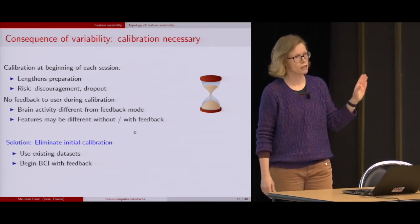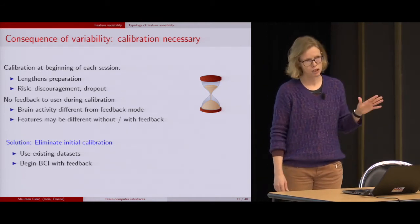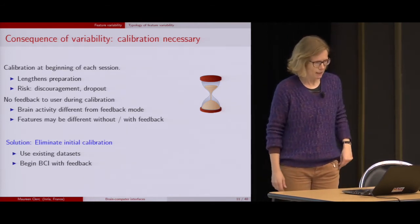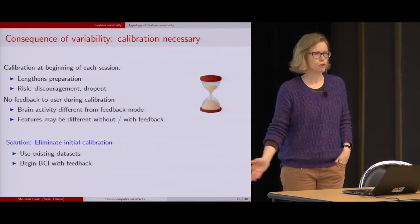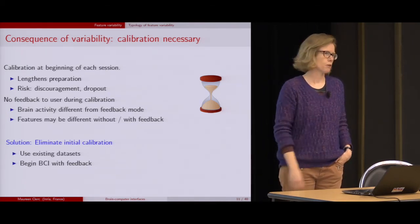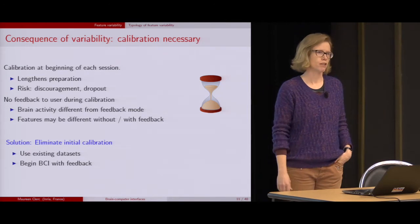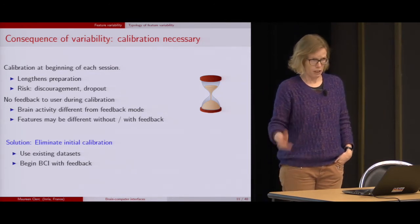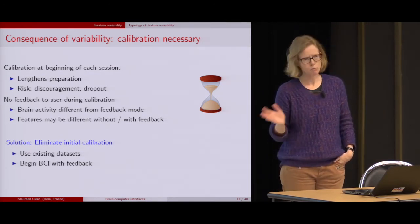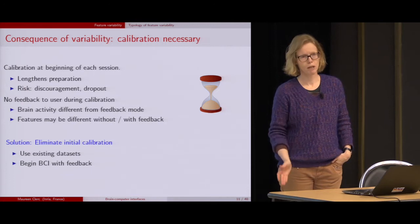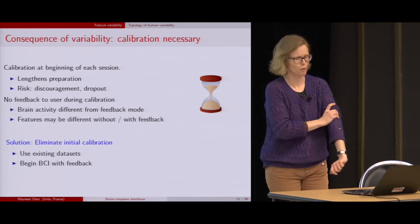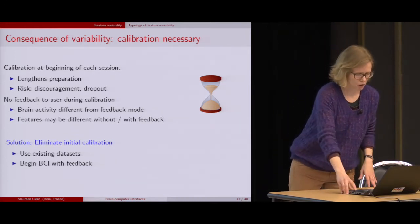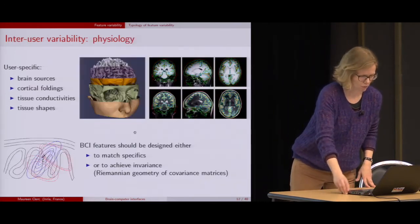The solution is just to eliminate this initial calibration — get rid of it. For this, use existing datasets; too bad if they don't correspond to the subject, we'll find ways to get around that. Begin the BCI with feedback. Even if it's not too good, maybe you can cheat and give them good feedback if you know what they're trying to do. But begin with feedback.